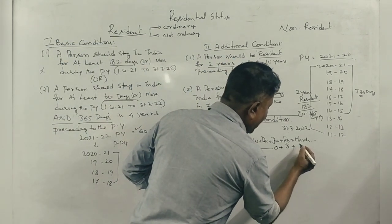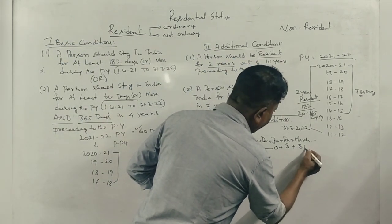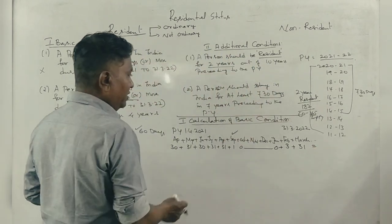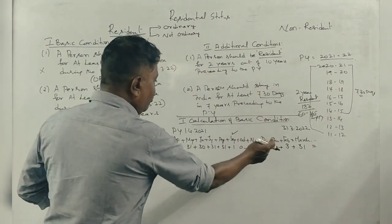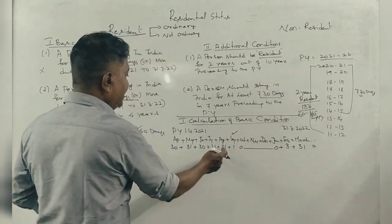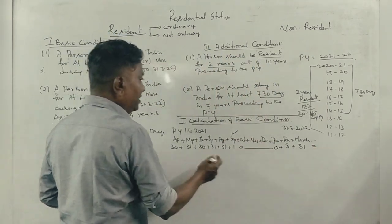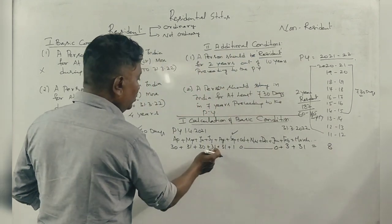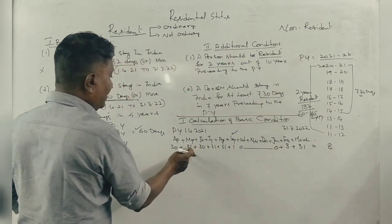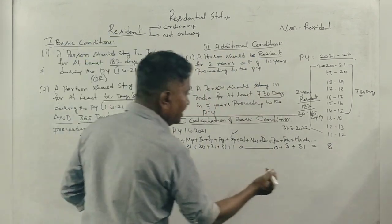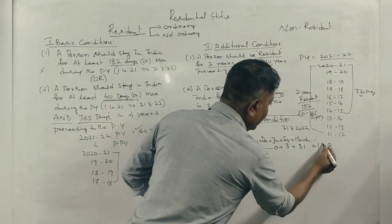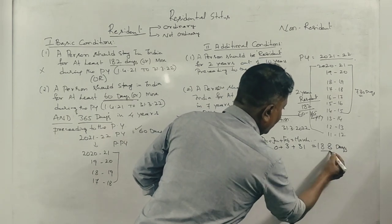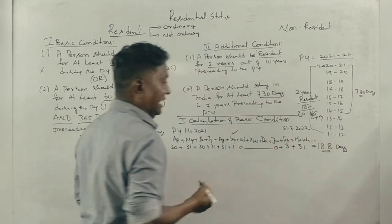Starting from March — which has 31 days — we count the days: April, May, June, July, August. The total number of days he stayed in India comes to 188 days.